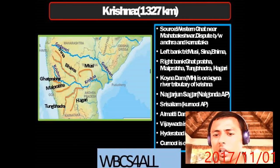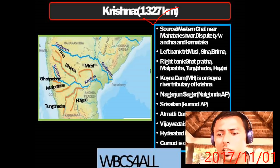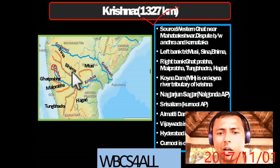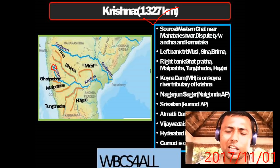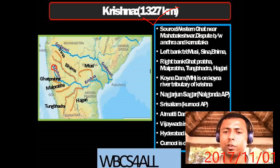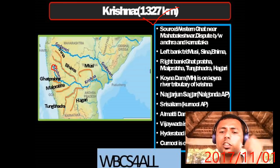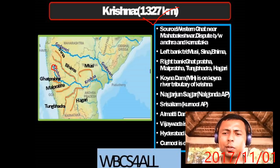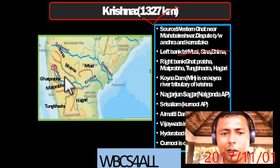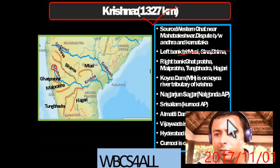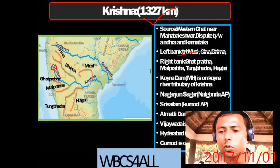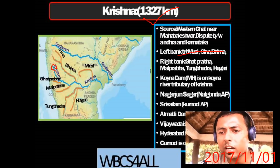The Krishna River is 1,327 km long. Its source is the Western Ghats near Mahabaleshwar in Maharashtra. There is water dispute between Andhra Pradesh and Karnataka. Left bank tributaries are Musi, Sina, and Bhima. Right bank tributaries are Ghataprabha, Malaprabha, Tungabhadra, and Hagari. Tungabhadra is a very important right bank tributary. The Koyna Dam in Maharashtra is on the Koyna River, a tributary of Krishna.